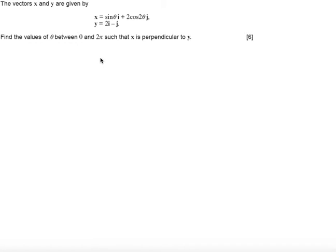x and y are given by x equals sin theta i plus 2 cos 2 theta j. y is 2i minus j. We want to find the values of theta between 0 and 2 pi such that x is perpendicular to y.